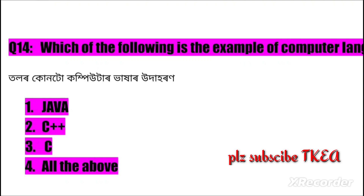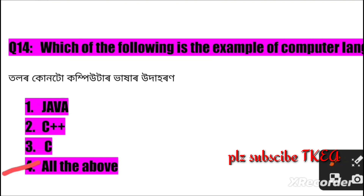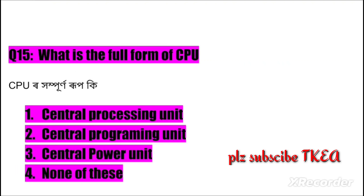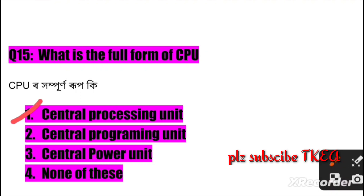Question number fifteen: What is the full form of CPU? Option one: Central Processing Unit, two: Central Programming Unit, three: Central Power Unit, four: none of these. The right answer is number one: Central Processing Unit.